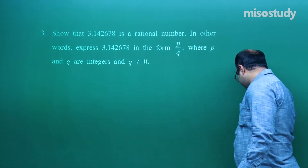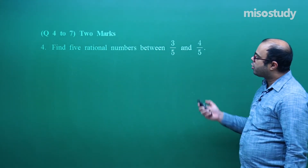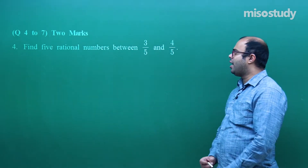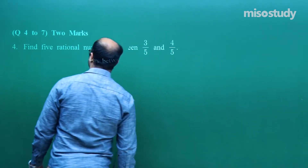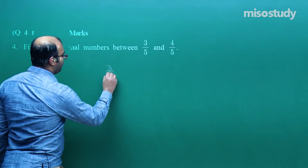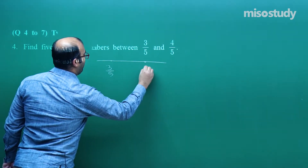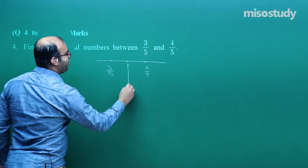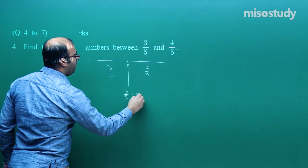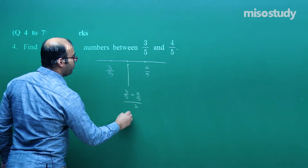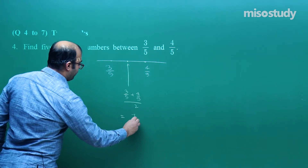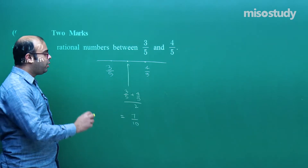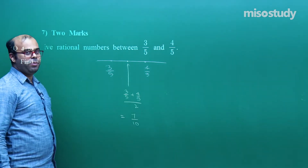The fourth question, worth two marks: find five rational numbers between 3/5 and 4/5. We place 3/5 and 4/5 on a number line. The first rational number is exactly in between, calculated as (3/5 + 4/5) / 2 = 7/10. So the first rational number between 3/5 and 4/5 is 7/10.